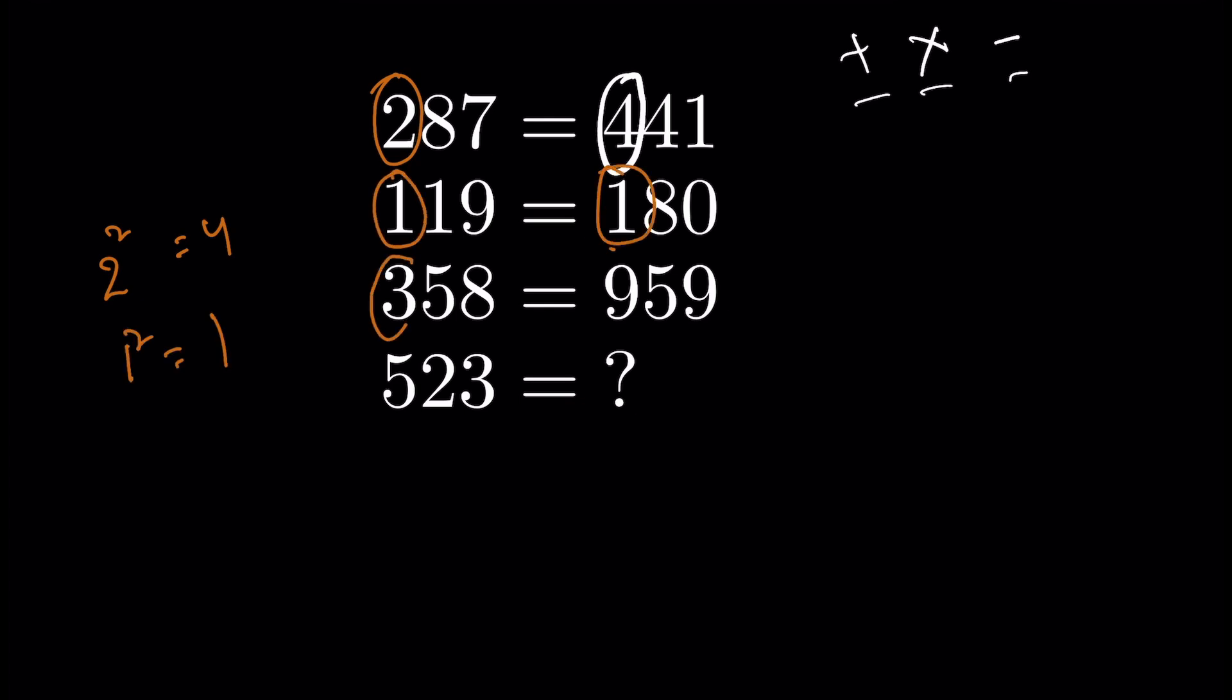In the third number also, 9 is the square of 3. So here we can expect square of 5, that is 25. But the square of these two numbers are single digit numbers.